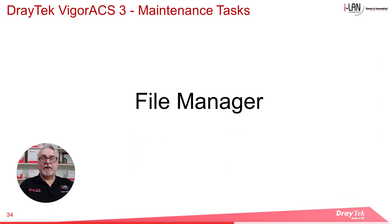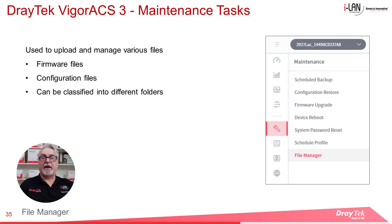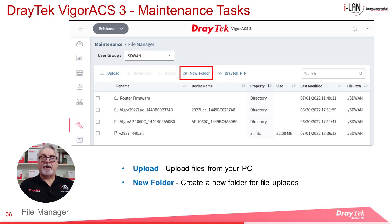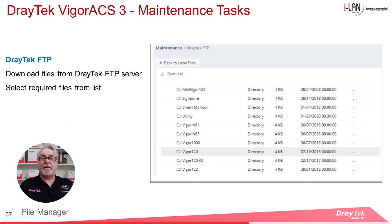The final maintenance task we'll look at today is File Manager. We briefly looked at this during our discussion of firmware upgrades. The File Manager is used to upload and manage various files to ACS3, such as firmware files or configuration files. They can also be classified into different folders to make them easier to locate. Within File Manager we have three options: Upload to upload files from your PC to the ACS server; New Folder to create folders to place uploaded files into; and the Draytech FTP tab, which can be used to download files directly from the Draytech FTP server. When connected, you'll see a list of folders for various products — just navigate to the required product and select the file you wish to download.